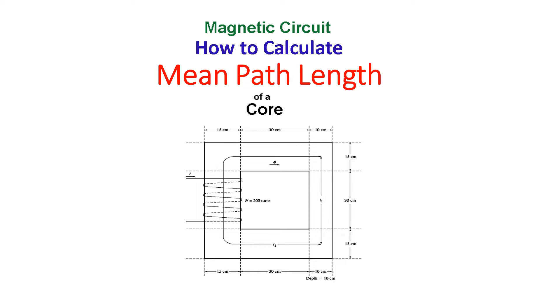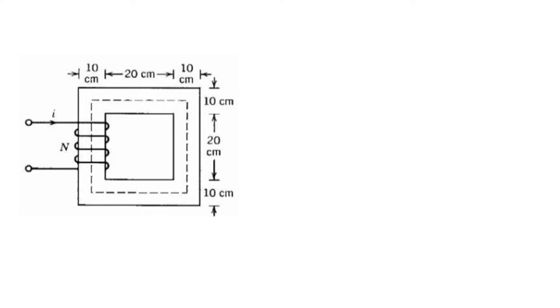Bismillahirrahmanirrahim. In this video, we'll try to understand how to calculate the mean parts of a core. This is part of Chapter 1, Magnetic Circuit. We'll also try to clarify some of the misconceptions that I myself had.